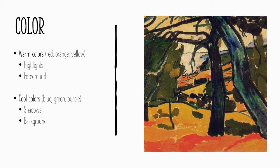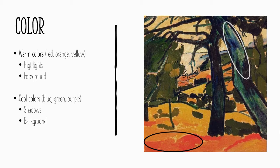Some other things to consider with color would be the use of warm colors — red, orange, or yellow. These can be great for highlights or anything in the foreground because they really stand out and seem to move closer to the viewer. Cool colors such as blue, green, and purple can also be used in these types of pieces. They're great for shadows and for things in the background because they tend to fade away from the eye.